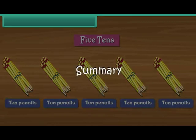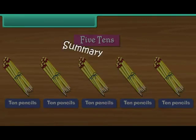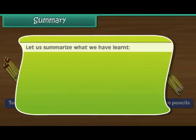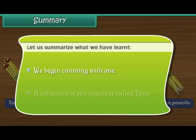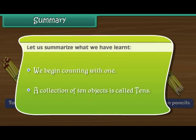Summary. Let us summarize what we have learnt. We begin counting with one. A collection of 10 objects is called tens.